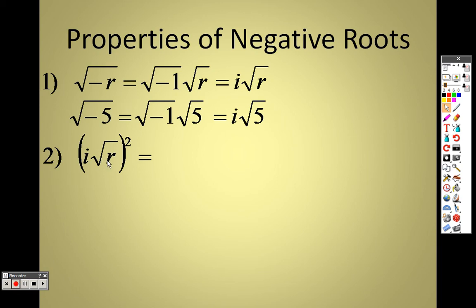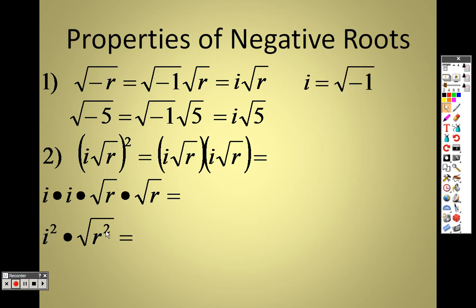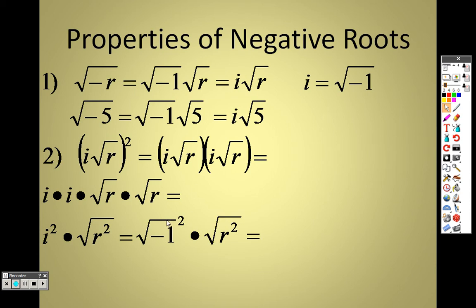For i√r squared — you have two of those, so i times i is i squared, and the square root of r squared: the square root of a square cancels out, so you end up with just r. But we need to remember some things about this. These two items cancel, so that's negative, and we end up getting negative r.